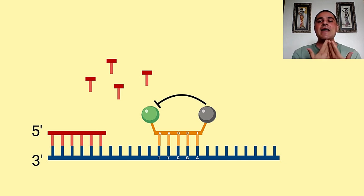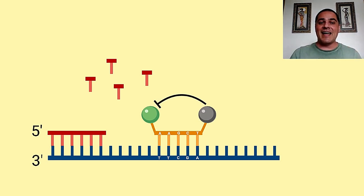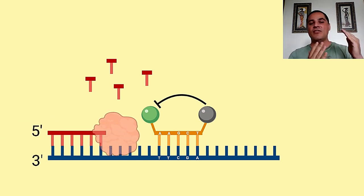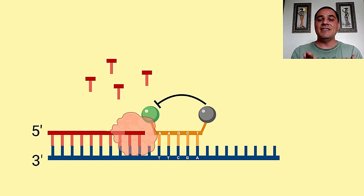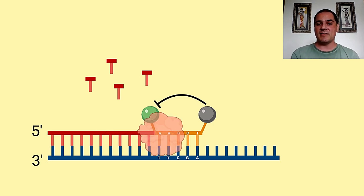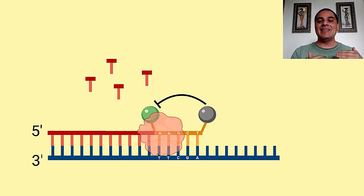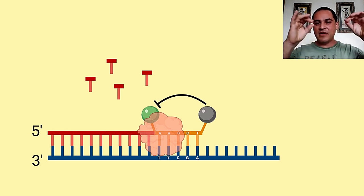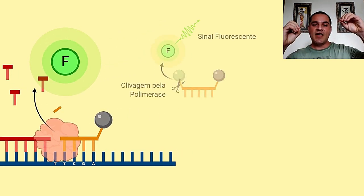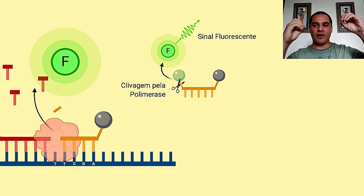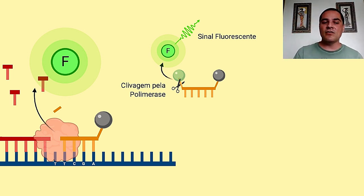Como vai funcionar a emissão de fluorescência? Quando a sonda se liga, ela tem uma fluorescência zero. Mas a DNA polimerase, quando ela começar a produzir a nova fita a partir do molde e encontrar a sonda, ela vai destruir a sonda, porque ela tem uma outra capacidade além de copiar — ela tem uma atividade que a gente chama de exonuclease, que degrada nucleotídeos que estão na frente dela. Então ela vai destruir a sonda, separando o fluoróforo do quencher, e nesse momento o fluoróforo vai conseguir emitir a sua fluorescência.